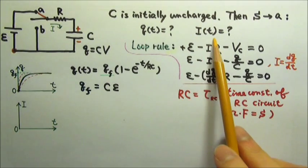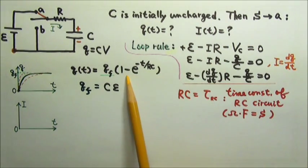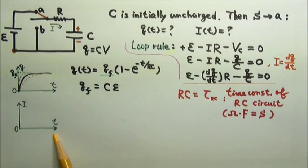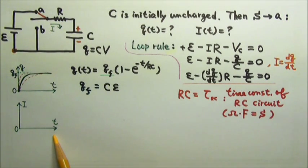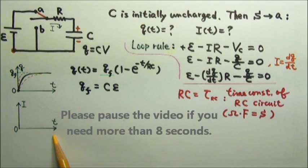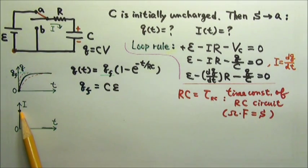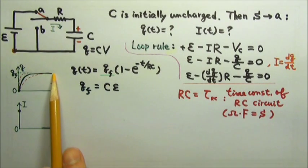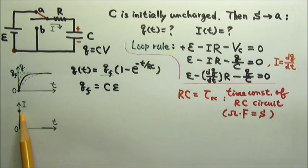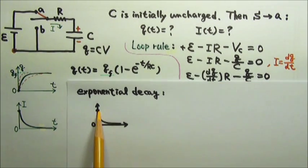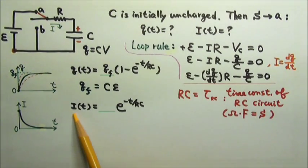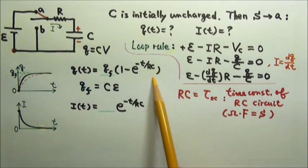For the current as a function of time, we can just take the derivative of that equation. But for now, we'll sort of guess the answer from the graph. At first there is a charging current, but when the capacitor becomes fully charged there is no more charging current. So the graph is probably something like this — and that is an exponential decay graph. So the current as a function of time is just this exponential decay.